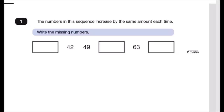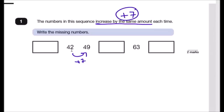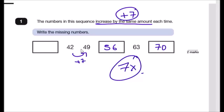Question 1: the numbers in the sequence increase by the same amount each time. You can see it goes 42, 49 — that's gone up by plus 7. Because we know it increases by the same amount, we just add 7 each time: 49 + 7 = 56, 63 + 7 = 70. This is literally the seven times table. For the first box, go back 7, so that's 35.